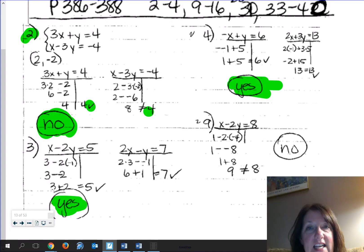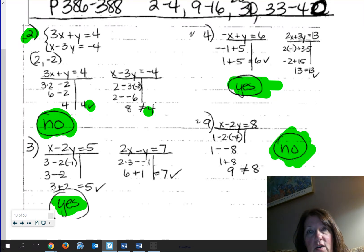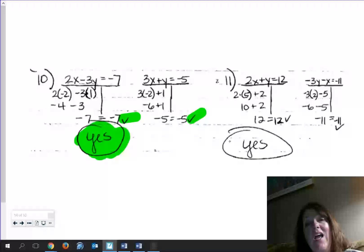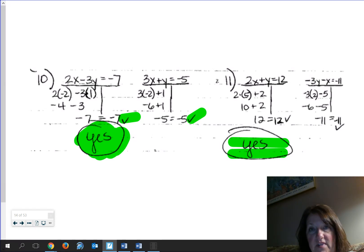Then I had you skip to nine. So take a jump to number nine. Now I know the odds are in the back of the book, but right away when you check it in the very first one, it doesn't work in the first one. Watch your signs, but it doesn't work. Number 10, that one is a yes. It does work in both of the equations, as does 11.